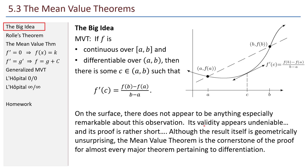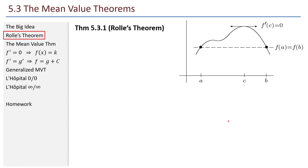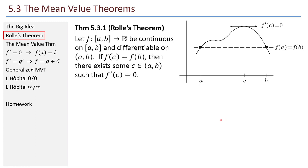So we begin with Rolle's theorem. Rolle's theorem is the starting point, and from Rolle's theorem we will deduce the mean value theorem. Let f be a function from the closed interval [a, b] to the reals. Let it be continuous on the closed interval and differentiable on the interior. If f(a) equals f(b), then there exists some c in the interior such that f'(c) equals 0, like in the picture.